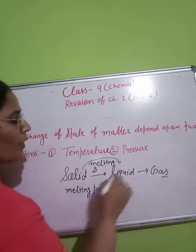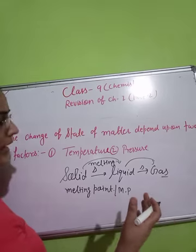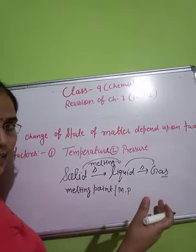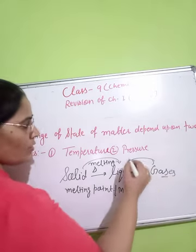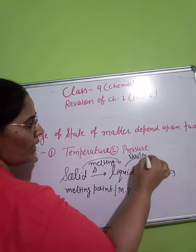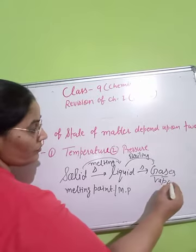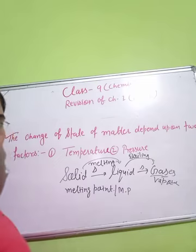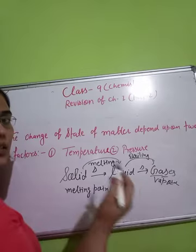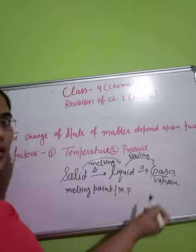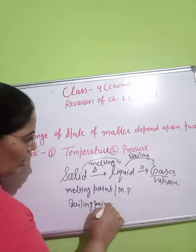The melting point is denoted by MP. When a liquid is heated, the particles gain motion, move apart, and convert into the gaseous form. That process is known as boiling, or vaporization. The temperature at which the liquid state starts to boil and convert into gas is known as the boiling point.